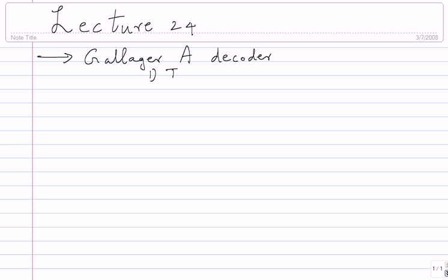One of the first things is it's an iterative decoder. In each iteration there are two steps: there is a bit-to-check step and the check-to-bit step. I call it step A and step B, but step A is basically the bit-to-check stage and step B is the check-to-bit stage. This is a specific example of what's in general called a message passing decoder.